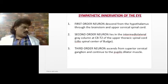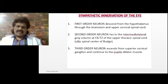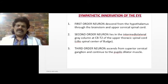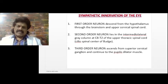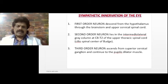The first-order neuron descends from the hypothalamus through the brainstem and upper cervical spinal cord. The second-order neuron lies in the intermediolateral gray column at C8–T2 of the upper thoracic spinal cord — the ciliospinal center of Budge. The third-order neuron ascends from the superior cervical ganglion and continues to the pupillodilator muscle.